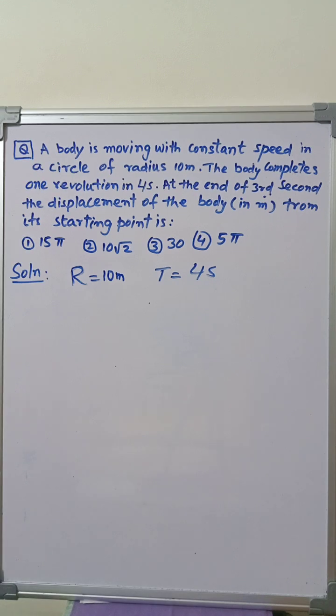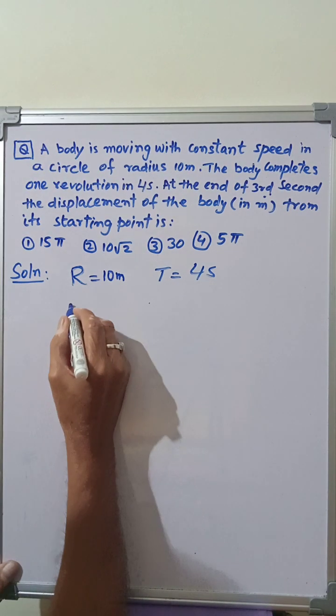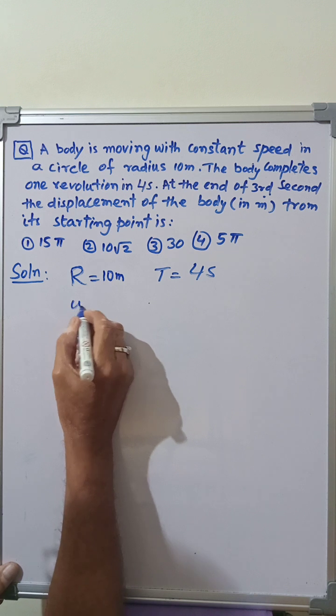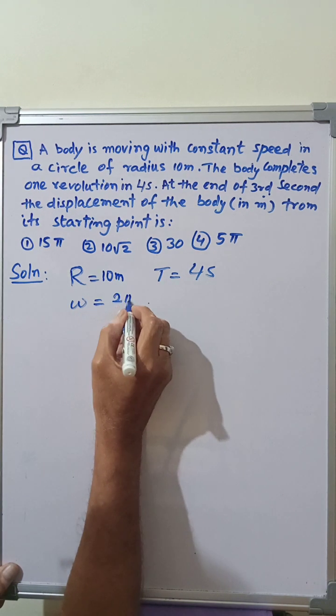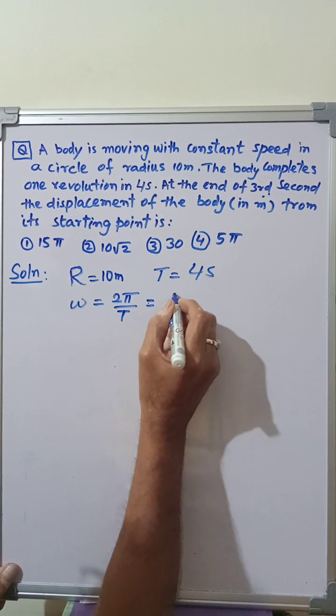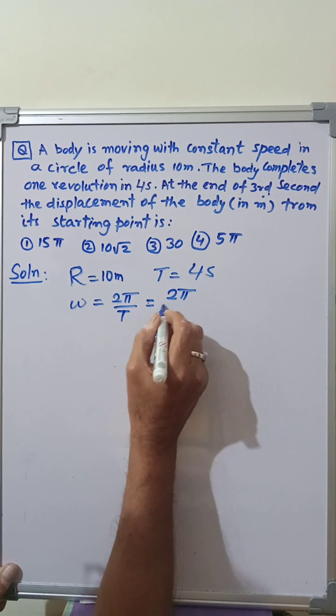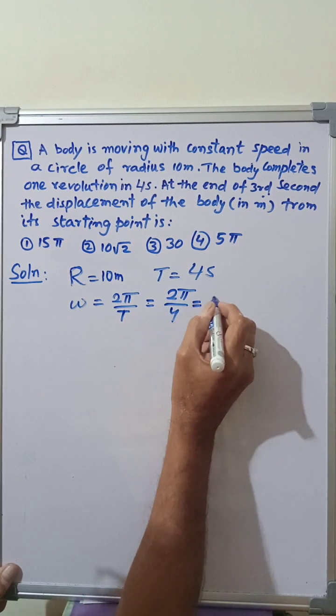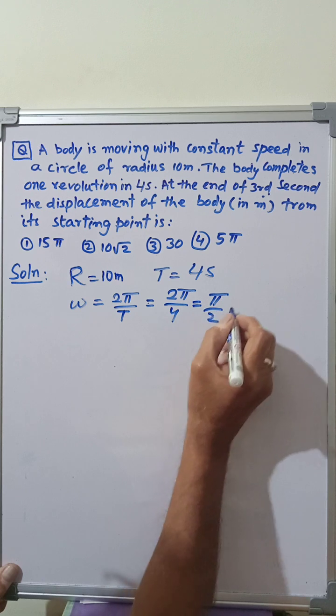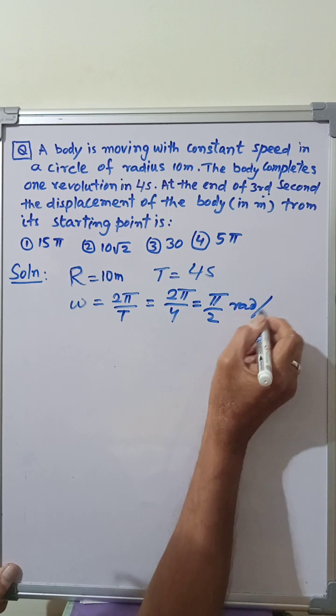The angular speed of the particle is equal to 2π by T is equal to 2π divided by 4 is equal to π by 2 radians per second.